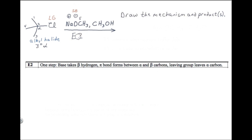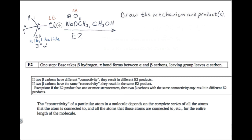Remember that for E2 we should label the alpha and beta carbons. We've already labeled our alpha carbon, so now let's label the beta carbons. This molecule has three beta carbons: carbon 1, carbon 4, and carbon 3. Which of those beta carbons should we use in our mechanism? The problem says to draw the product or products, so if necessary we would use all three beta carbons to get three different products. On the other hand, if these beta carbons give you the same product, we only have to use one of them.